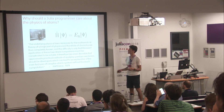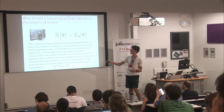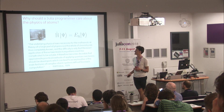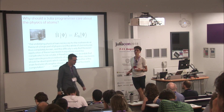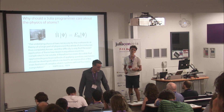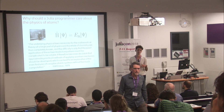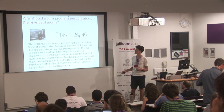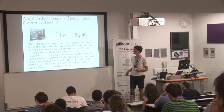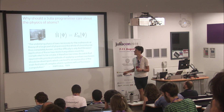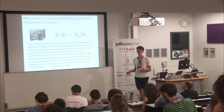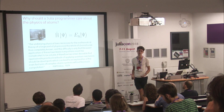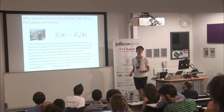A lot of this comes about because of work done just before the Second World War. This is Paul Dirac — it's his birthday today — and this is his representation of the Schrödinger equation, the equation that describes electronic structure. Everything around us is made of electrons. This is a famous quote from him, 1929, recognising that they had effectively found the equation that describes all of chemistry and all of materials. The problem was you couldn't really solve it.